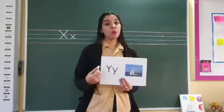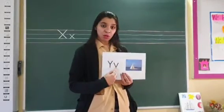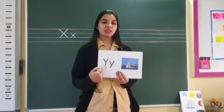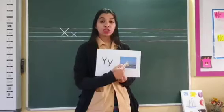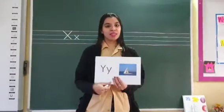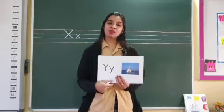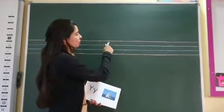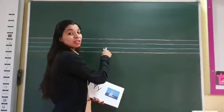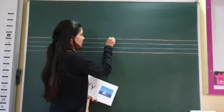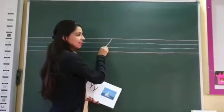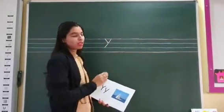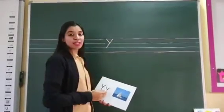This is letter Y — capital Y, small y. Y says 'yam'. Y for yacht. Now let us see on the blackboard how do we write letter Y. Here we have got red and blue lines with us. We will start from the first red line to the second blue line. We will draw one straight slanting line and a small slanting line from the red line to the first blue line — that gives us capital Y.